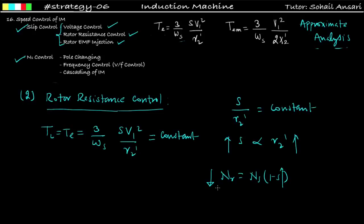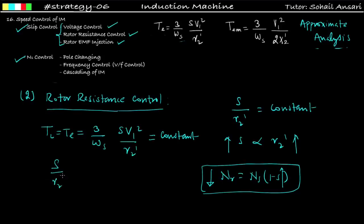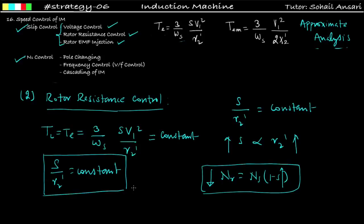The difference from voltage control is that here supply voltage is kept constant and rotor resistance is changed. If a problem involves rotor resistance control, you simply apply s/R2' = constant. If the question gives a new rotor resistance value (e.g., 0.5 or 1 ohm), substitute into s/R2' to find the new slip, then calculate Nr = Ns(1 − s) to find the new rotor speed.